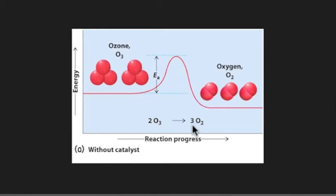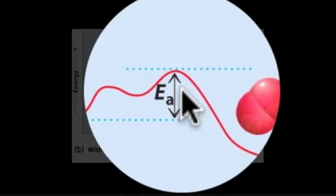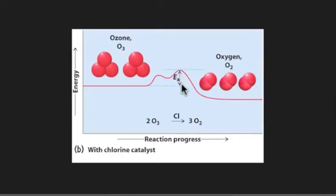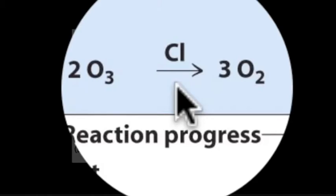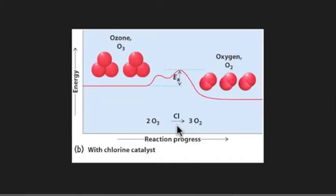We can use a catalyst to reduce the energy needed for these products to form. The activation energy here is shown being reduced by chlorine the catalyst. It is not part of the new product. It just helps reduce the energy.